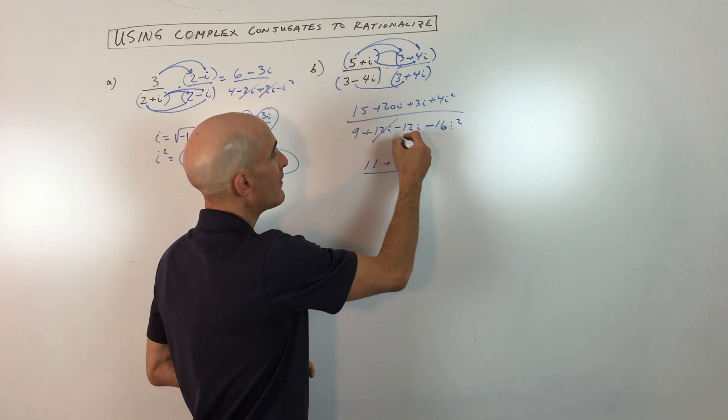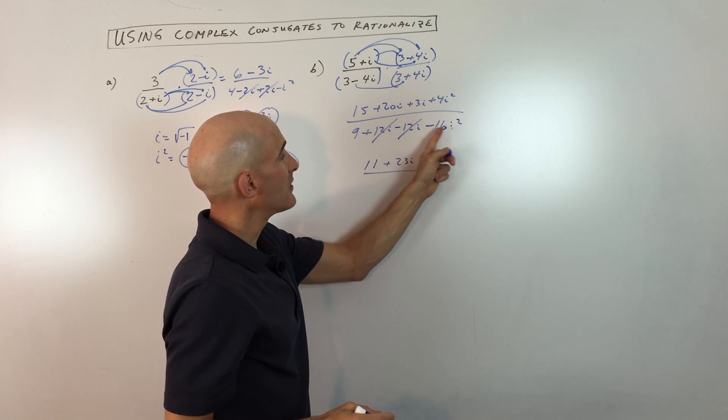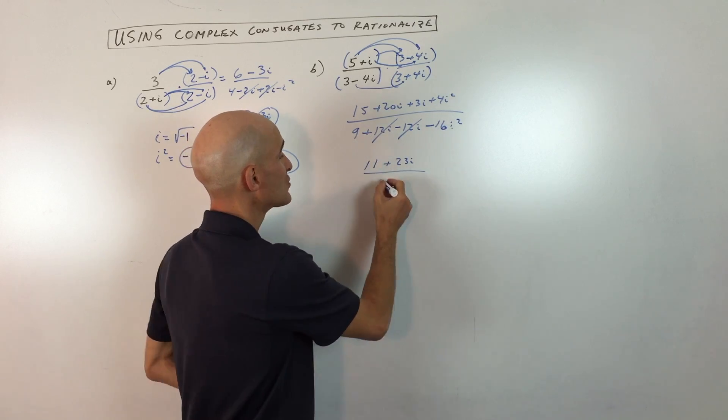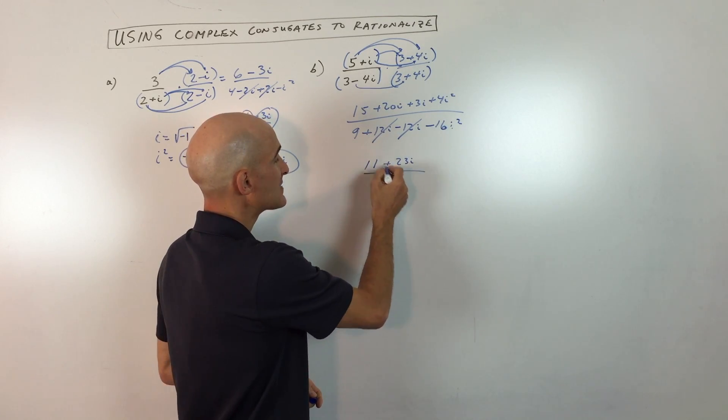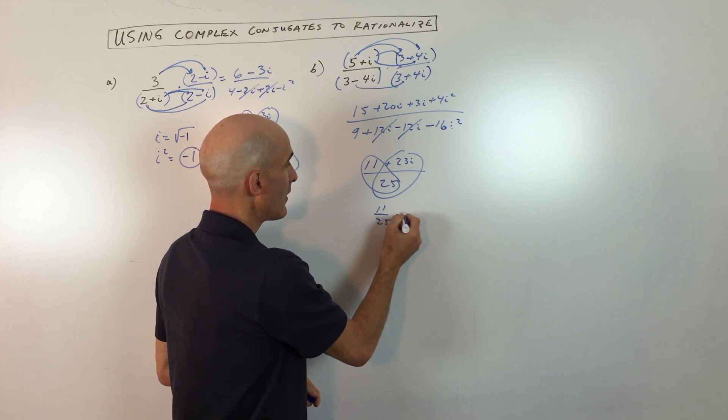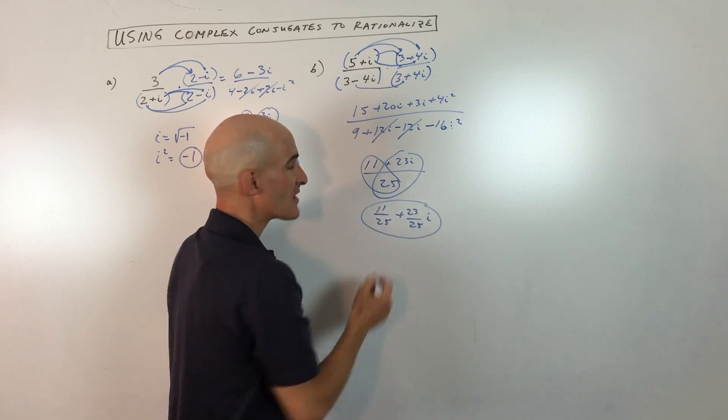Now for the denominator, you can see the 12i and negative 12i are canceling one another out. i squared is negative one times the negative 16 is positive 16 plus nine is 25. The last thing we want to do is we want to split this up into two fractions. We want to separate the real part from the imaginary part. And there we go. So that's our final answer.